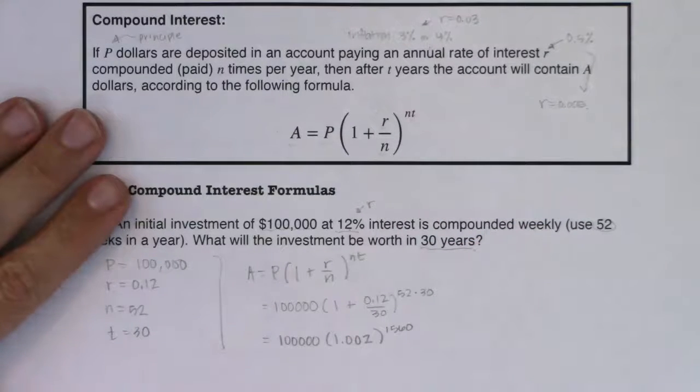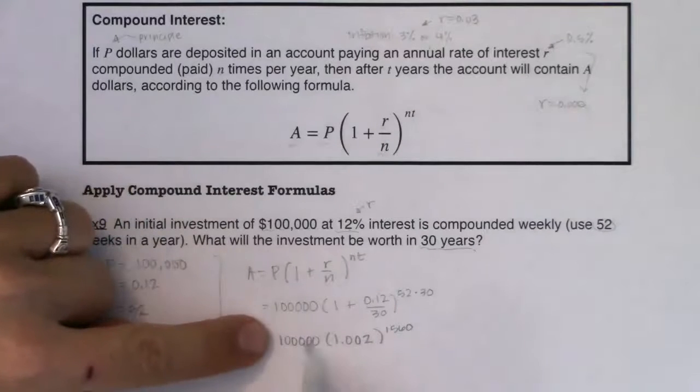All right. Now I just want to chat about this a little bit. We're going to start with 100,000 and each time out we're going to gain, each year out we're going to gain about, not each year, excuse me, each week we're going to gain about 0.2 percent.